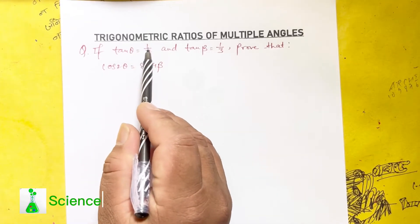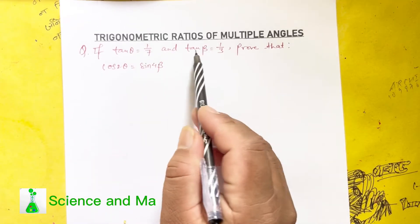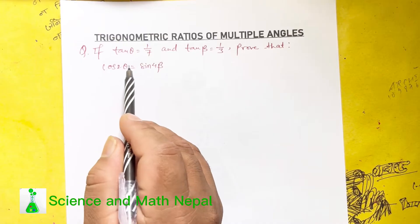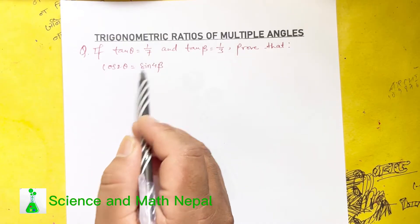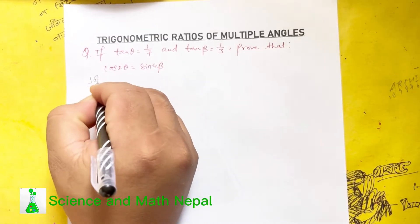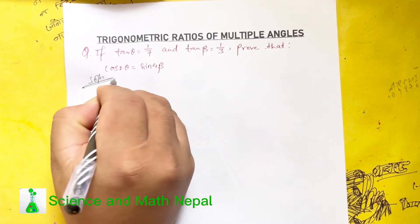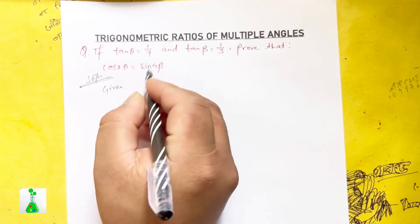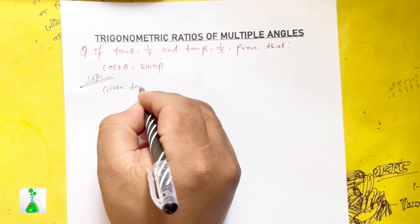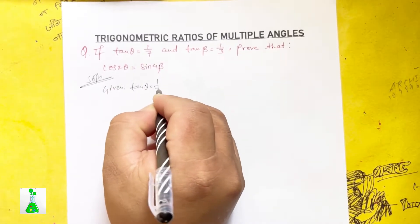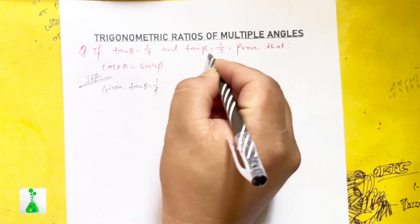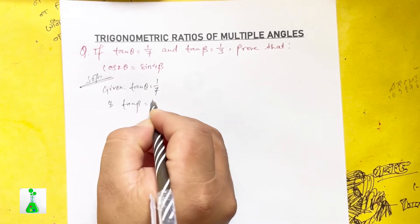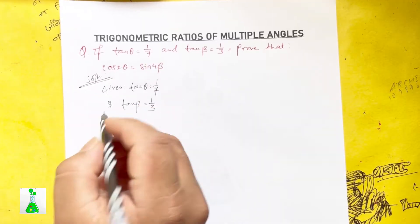If tan theta equals 1 by 7 and tan beta equals 1 by 3, prove that cos 2 theta equals sin 4 beta. Solution: given tan theta equals 1 by 7 and tan beta equals 1 by 3, we need to prove cos 2 theta equals sin 4 beta.